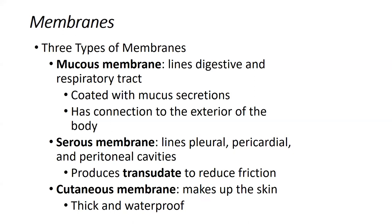You want your intestines and respiratory tract nice and moist, so there's a coating of mucus in these two areas, as well as an opening or connection to the external body surface. The nasal mucosa, oral mucosa, the inside of the ears, and other orifices typically have a mucous membrane — a moist membrane.